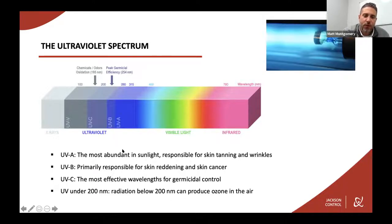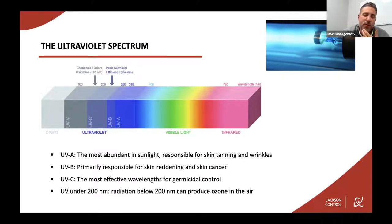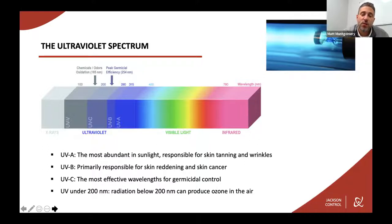A high-level overview of the electromagnetic spectrum as it relates to ultraviolet rays and sanitation. UV light covers a wavelength spectrum from 100 to 380 nanometers, subdivided into three regions. UVA is about 320 to 400 nanometers — the most abundant UV in sunlight, responsible for skin tanning and wrinkles. UVB is 280 to 320 nanometers, primarily responsible for skin reddening and skin cancer. UVC is 200 to 280 nanometers and is the most effective wavelength for germicidal control. Any UV under 200 nanometers can produce ozone when introduced with oxygen.